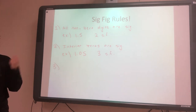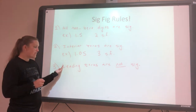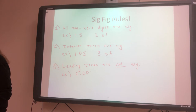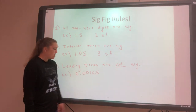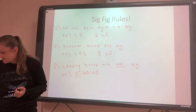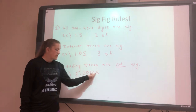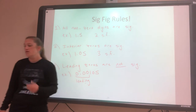Rule number three: leading zeros are not significant. So if a zero is at the very beginning of a number and if I go to the left I don't have a non-zero number there, it doesn't count. For example, 0.00105 — how many significant figures does this have? The 1 and the 5 count because of rule one. These zeros in the front are leading zeros — when you go to the left, you never hit a non-zero number. The zero between 1 and 5 is an interior zero, so that one counts. So this is also only three significant figures.